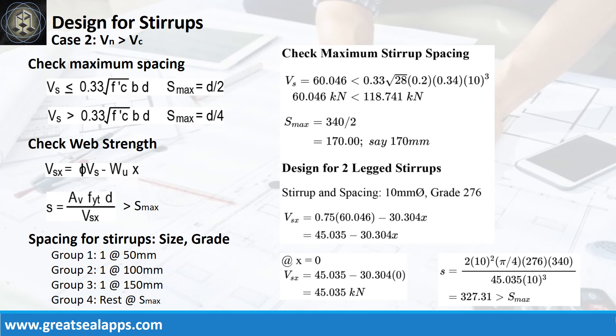The maximum stirrup spacing is 170 mm. The web strength at the face of support is 45.035 kN, with an initial spacing of 327.31 mm. The stirrup spacing schedule is as follows: one at 50 mm, one at 100 mm, one at 150 mm, and the rest at 170 mm.